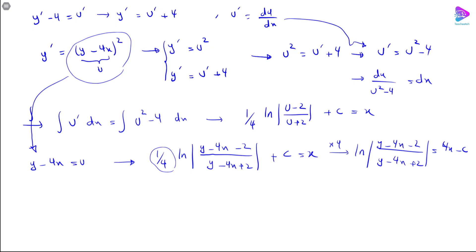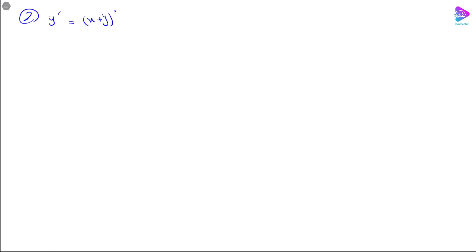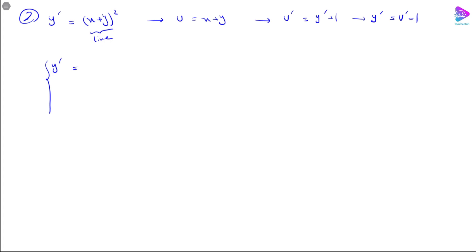Let's take a look at example number two: y prime equals (x plus y) squared. Again, I set u equal to x plus y, so u prime equals y prime plus 1, or y prime equals u prime minus 1. Since y prime also equals u squared, putting these together gives u squared equals u prime minus 1, or u prime equals u squared plus 1.